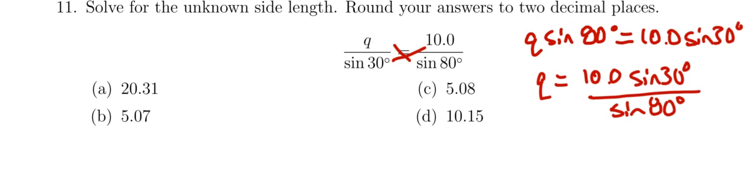So now my calculator is 10 multiplied by the sine of 30, divided by the sine of 80, looks like I get 5.1 or 5.077.